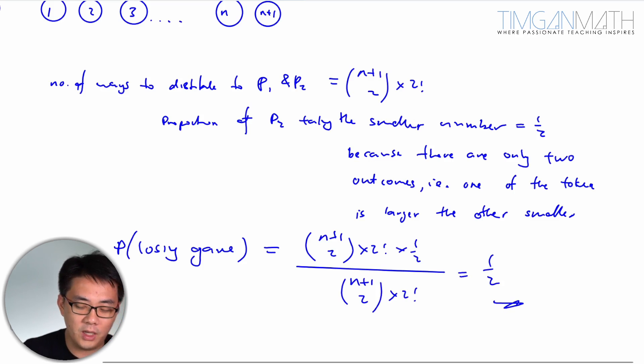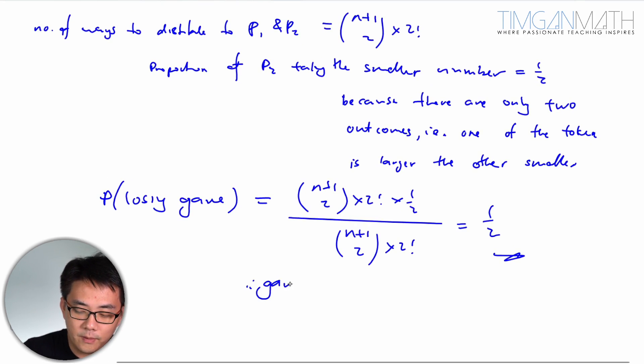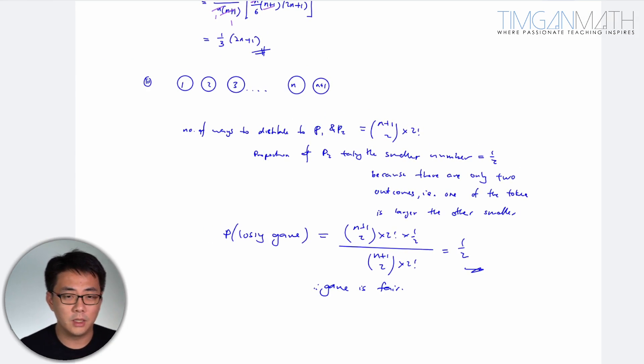In other words, the game is fair. That's how you can explain. This game is definitely fair. If you have 50% chance of losing, you definitely have 50% chance of winning. So this is how you understand this part here.